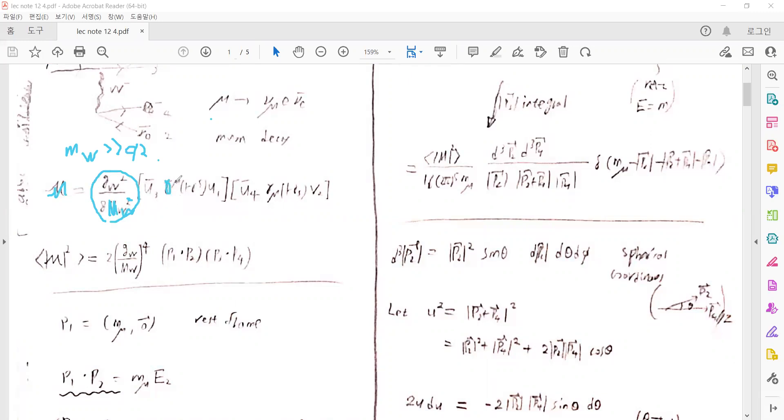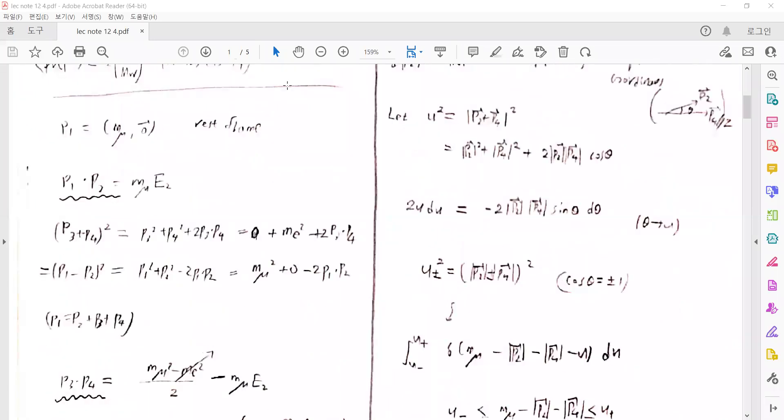There are vertices with gamma mu and 1 minus gamma 5, because of the weak interactions, and there are some spinor terms. If we square this S-matrix and sum over the unpolarized spins, then we can write the product using the trace theorem for spin summation. We will work in the rest frame of the muon, so the momentum of the muon equals zero.